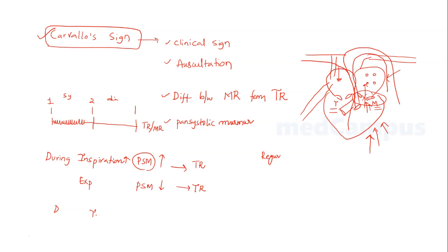The vice versa is true for mitral regurgitation. During inspiration, the pan-systolic murmur decreases in intensity in MR because blood flow to the left side of the heart decreases during inspiration. But during expiration, blood flow to the left side of the heart actually increases, so during expiration the pan-systolic murmur increases in intensity in case of mitral regurgitation.